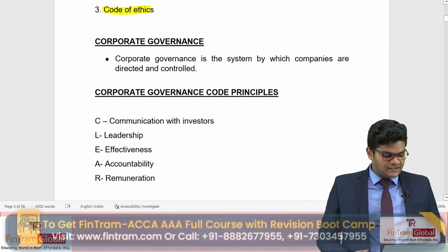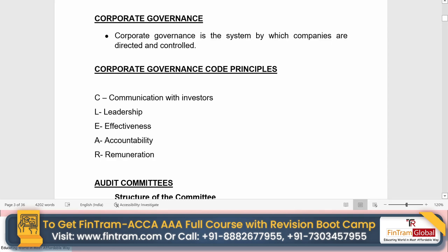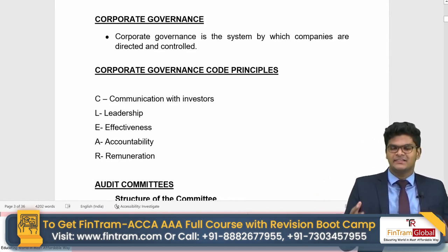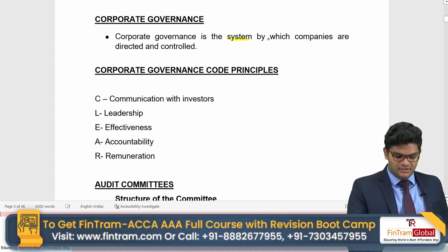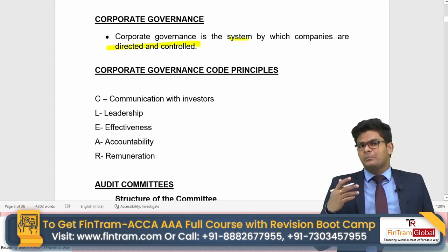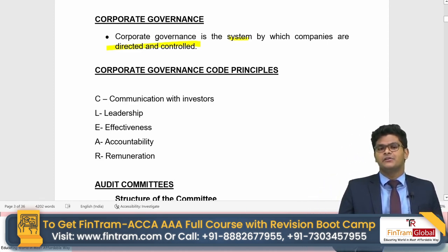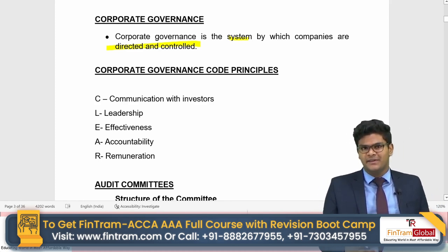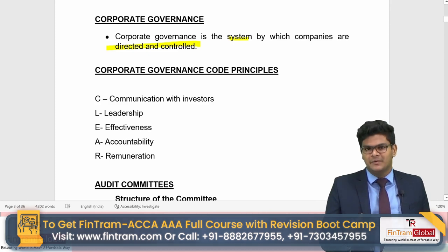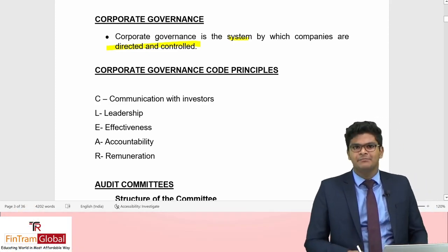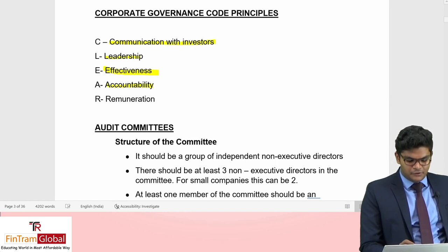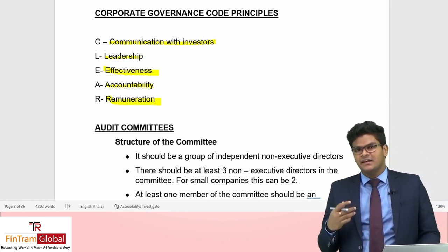Moving on to corporate governance — basically a system by which companies are directed and controlled. Good corporate governance measures can increase the credibility of an organization. The UK Corporate Governance Code principles can be memorized using the mnemonic CLEAR: C for Communication with investors, L for Leadership, E for Effectiveness, A for Accountability, and R for Remuneration.